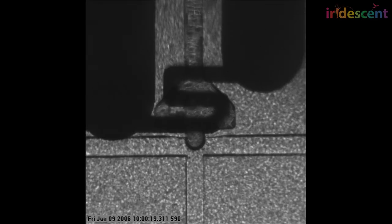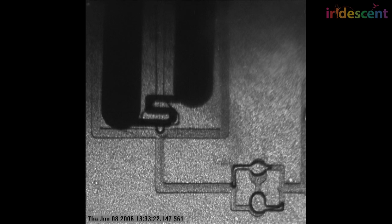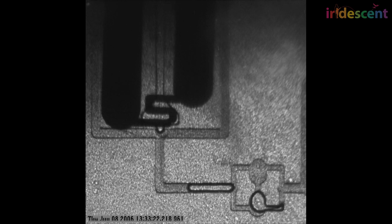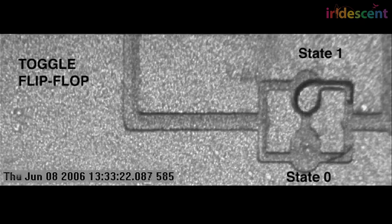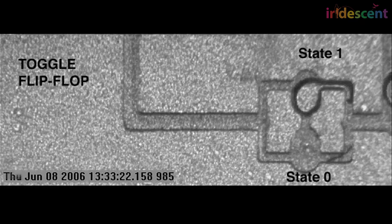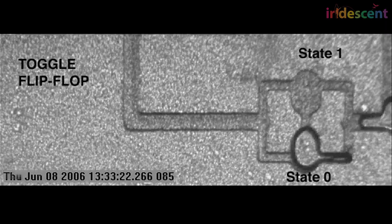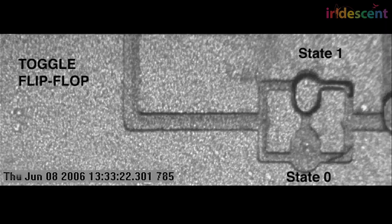So we took that same idea and implemented these little transistor gates, but now using fluids, where another control line that has little bubbles walking through will tell a different circuit to either go right or go left.